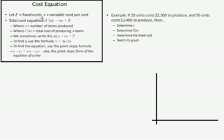We need to describe what those terms mean. F is a fixed cost — fixed costs include things like overhead to operate a business, pay taxes, rent, and all that kind of stuff. V is a variable cost per unit. It costs a little more to produce more units if we have to hire more workers or do other things, so we call that a variable cost.